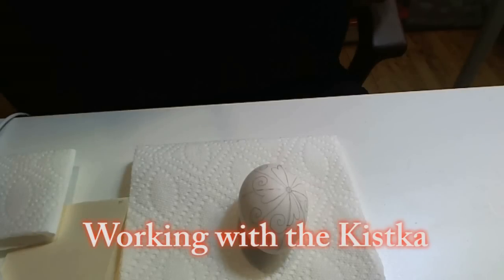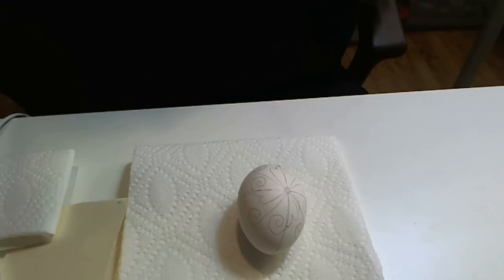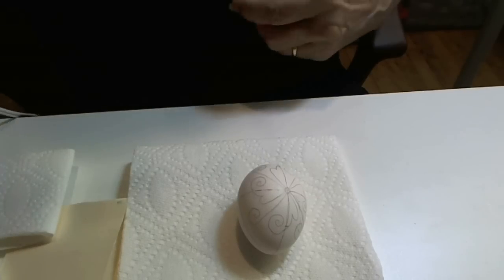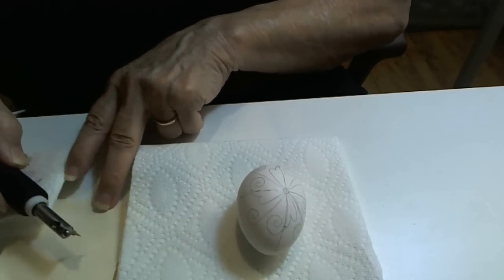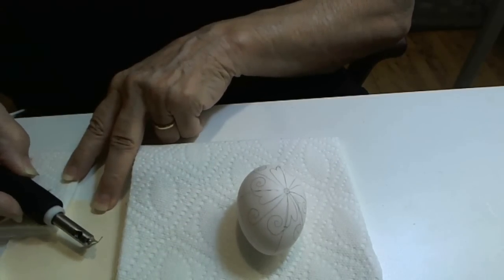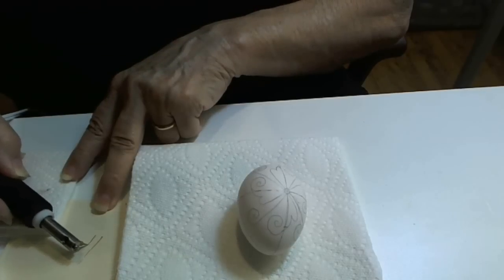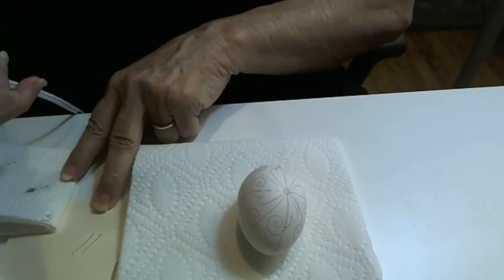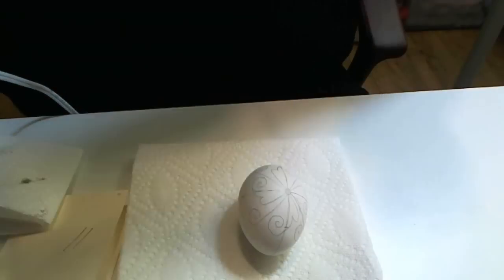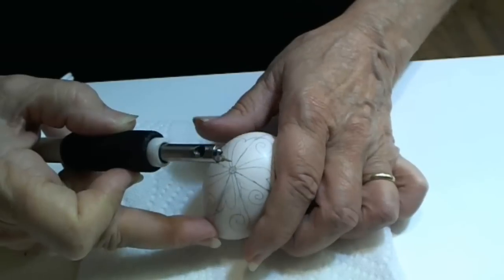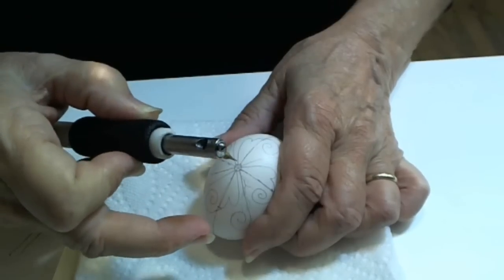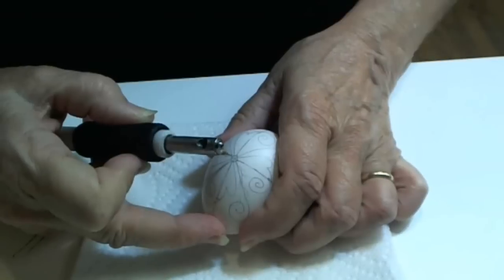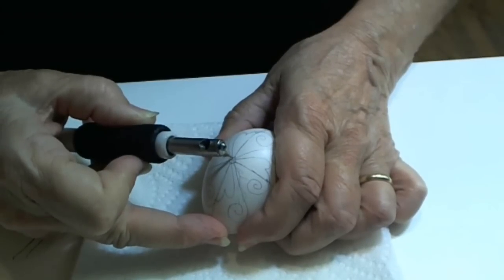Before I start on my egg, there are two things that I do. One is to make sure I won't have any drips by wiping on a tissue. The next one is I check to see if the flow of my wax is coming out of the tip of my tool. I hold my egg, I get comfortable with my egg, I get comfortable with holding my kiska, and then I begin.